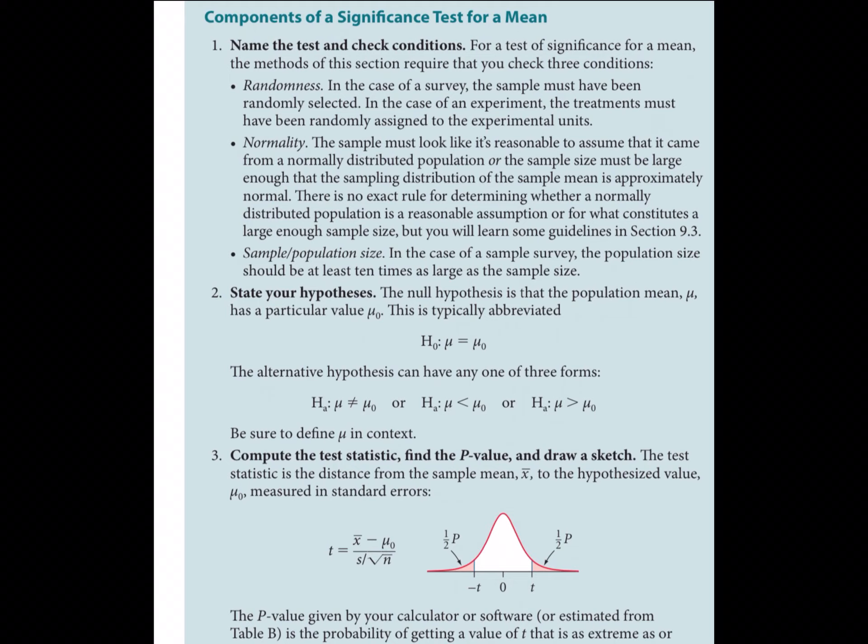If the sample is at least 40 in size, we don't care if the distribution isn't perfectly normal — results will still be accurate. For samples under 15, the data must be mostly normal to begin with. The population should still be at least 10 times larger than the sample. For hypotheses, we use the symbol mu: mu equals whatever we hypothesize. For example, I might hypothesize the average GPA is 2.8 — that's my mu-null. The alternative can be not equal to, less than, or greater than. The test statistic is t instead of z.